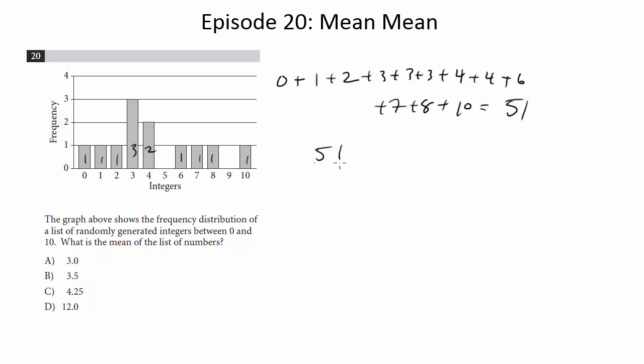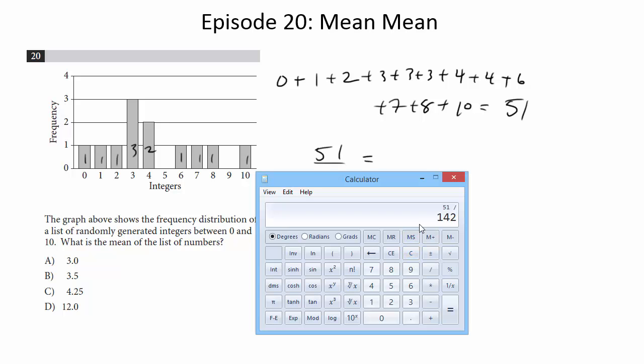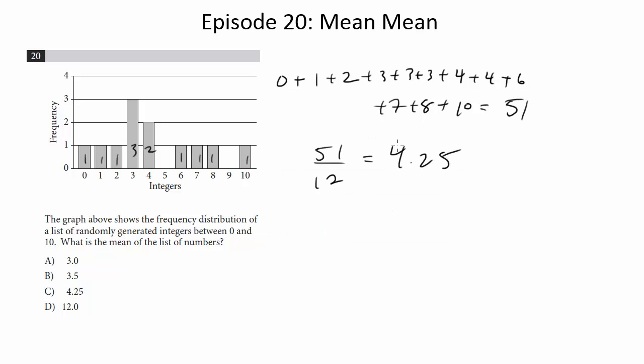So we're going to divide 51 by 12. See what we get. That gets me 4.25, and that's choice C.